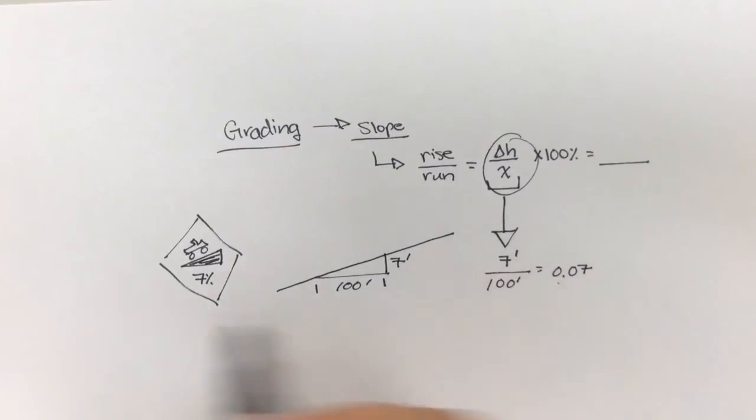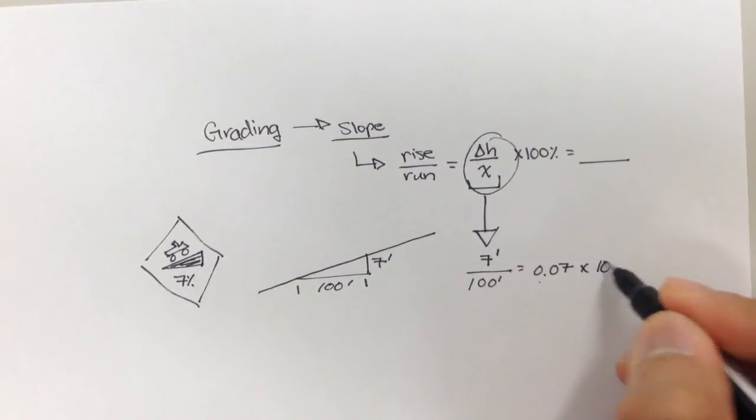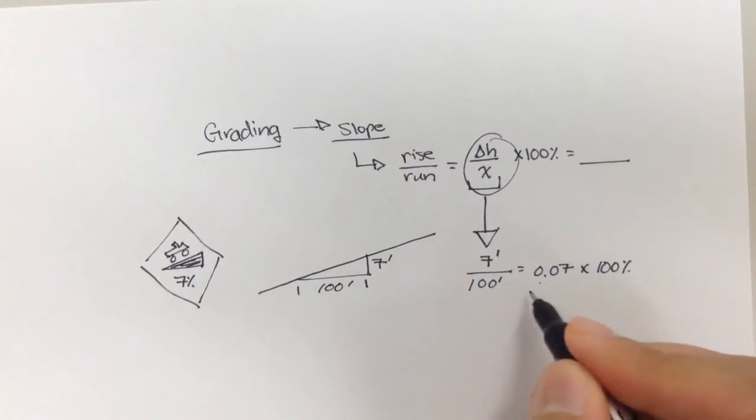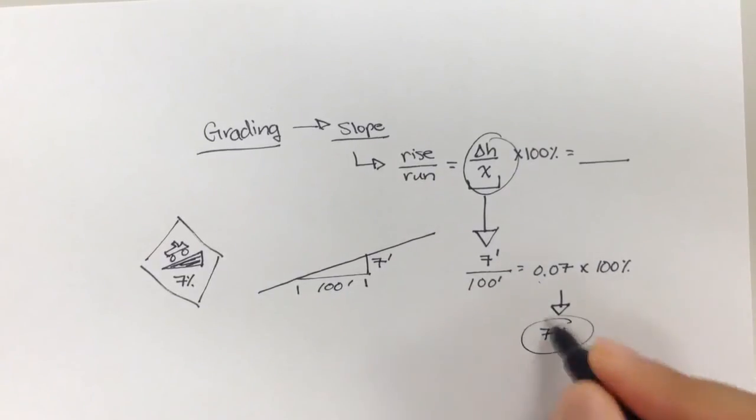We don't want to put 0.07 on a sign, right? So we multiply it by 100, and our result is 7%, right? 1, 2, 7%. And this can, of course, be an incline or a decline. So slope can go either up 7%, or it can go down 7%, right?